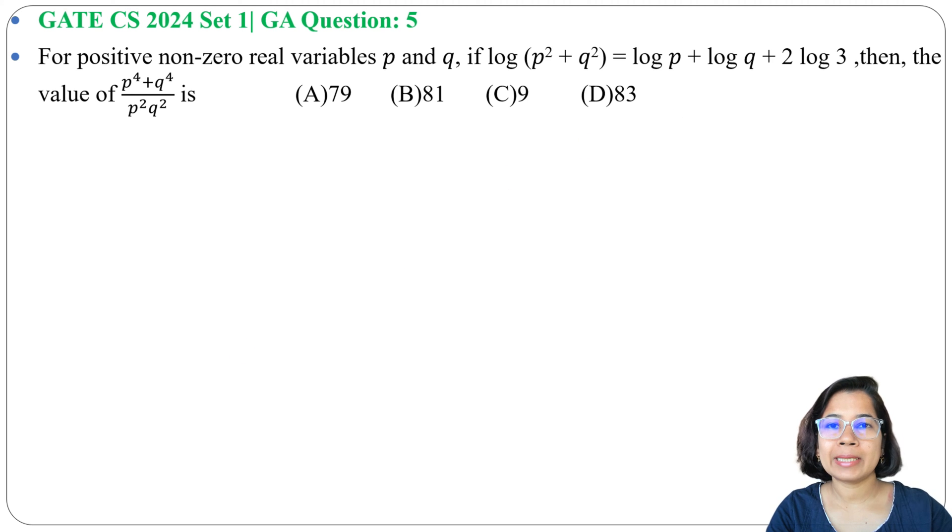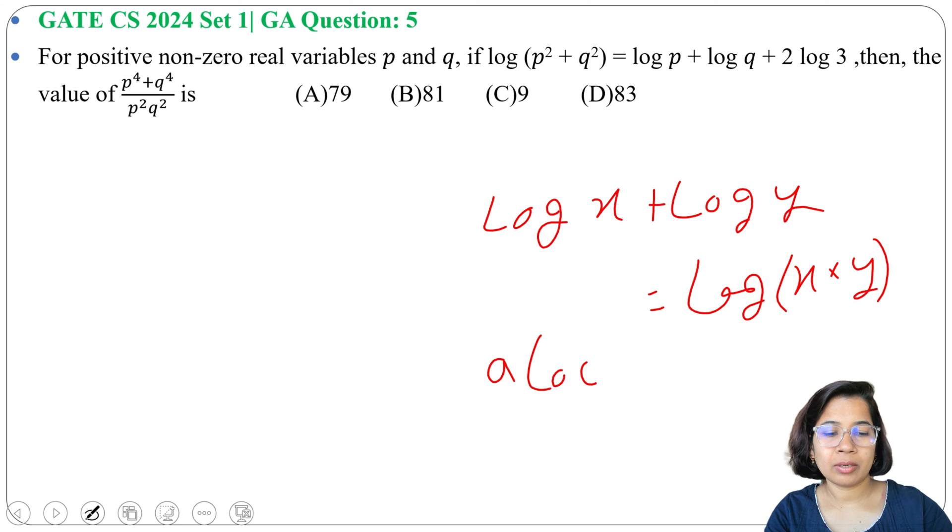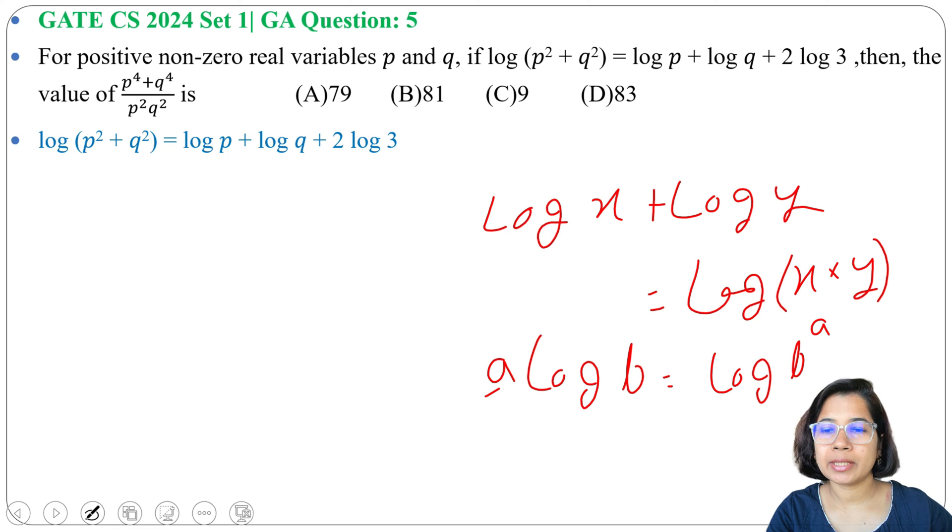Before solving this, first remember some formulas of log, like log x + log y equals log xy. We can multiply x with y. Then a log b equals log of b power a. Now we will use these two formulas. So here it's given log(p² + q²) = log p + log q + 2 log 3. So this 2 log 3 we can write as log of 3², which is log 9.